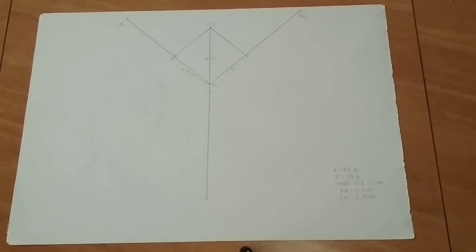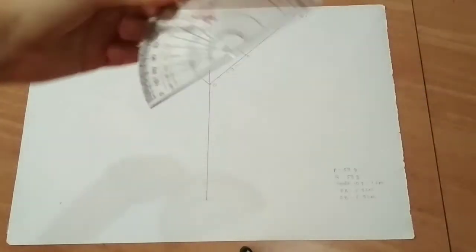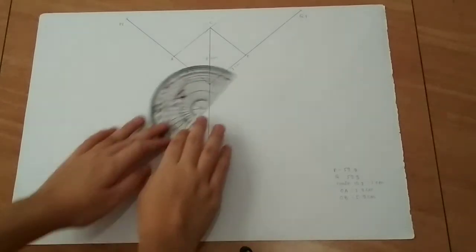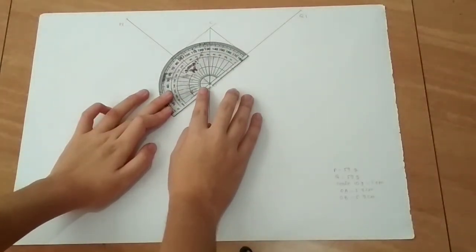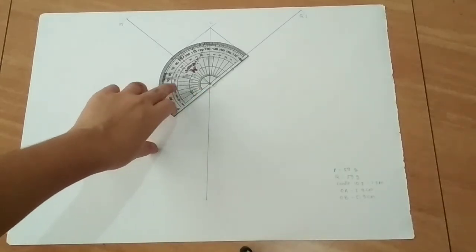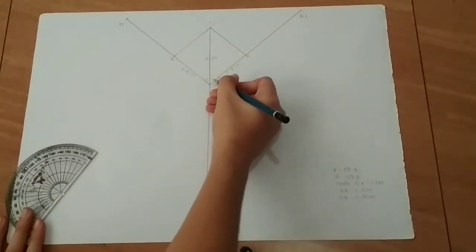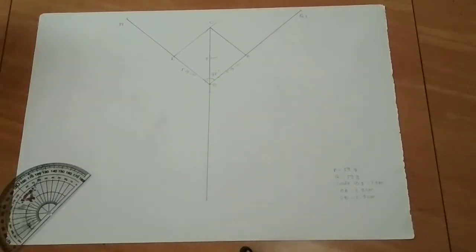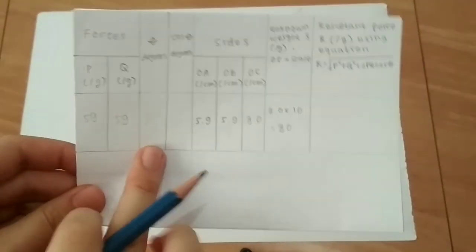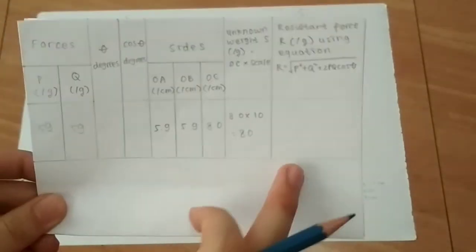So now that we have calculated our mass of our unknown object using our first method, we can now proceed to using our second method, which is using a protractor to confirm the mass of our first method. So here's my protractor, and I'm just going to measure the angle AOB. So we can see that, I don't know if you can see it clearly, Mr. Fetty, but from my protractor, it says that angle AOB is about 94 degrees. So I'm just going to write it there. This is 94 degrees. And I'm just going to plot that on my table here on the theta.